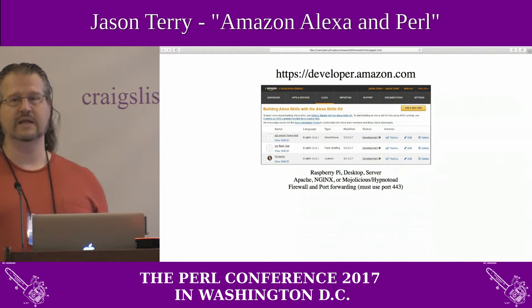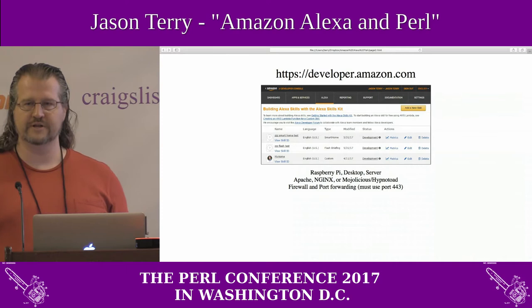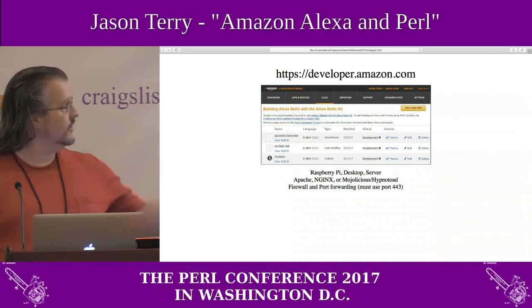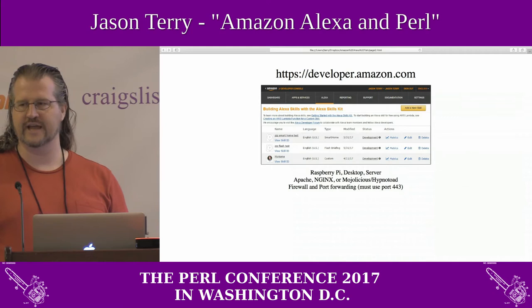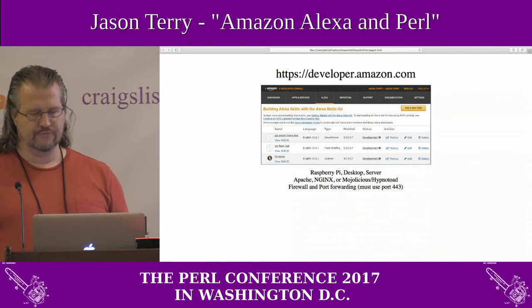What are you going to need in order to start and create your own home automation system? First, you're going to need a developer account. Thankfully, that's free. You can go to the giant URL at the top there to sign up if you haven't already. Odds are if you're using AWS, you probably already have an account.